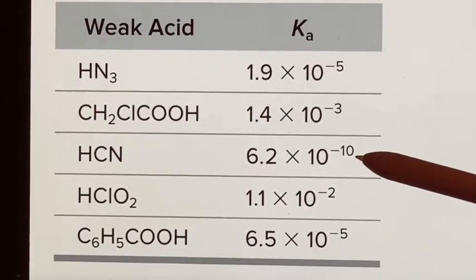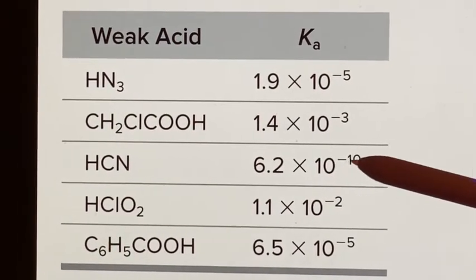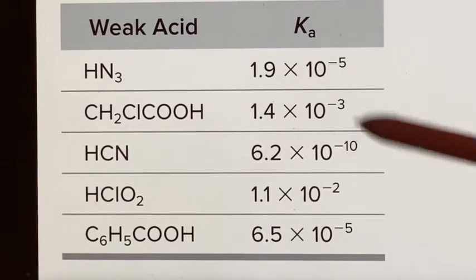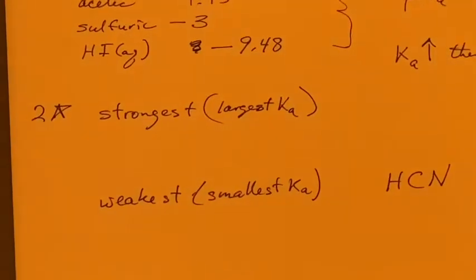So now I can just go look at them in terms of their Ka. That one is way different than all the others. 10 to the minus 10. That's really, really tiny. That is the smallest one here. So that one's the weakest.